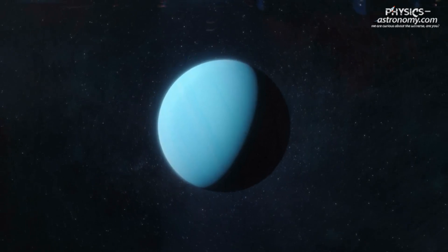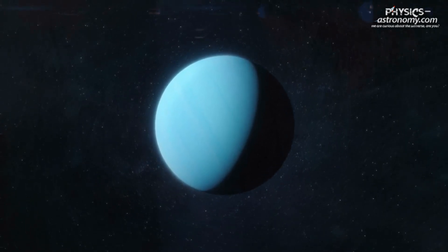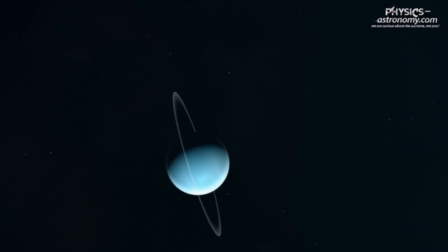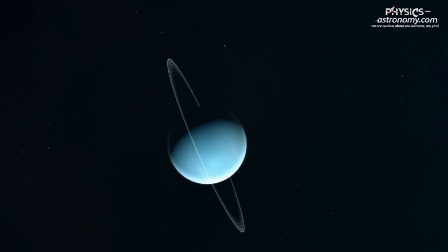New research reveals that Uranus takes a pounding more frequently than previously thought. Two giant collisions turned Uranus on its side, unraveling the mysteries of its axial tilt and shedding light on planetary evolution.